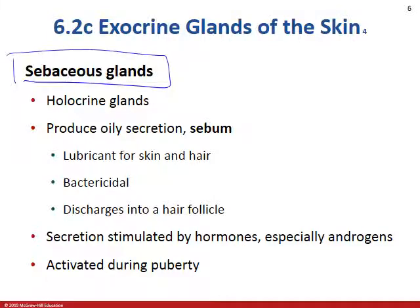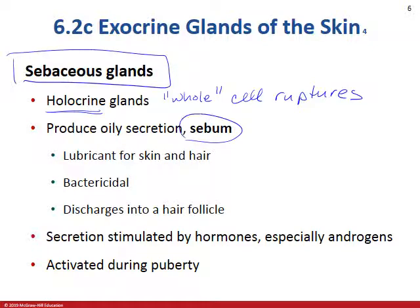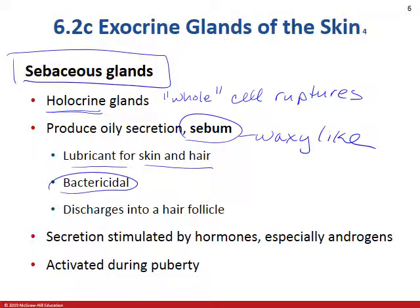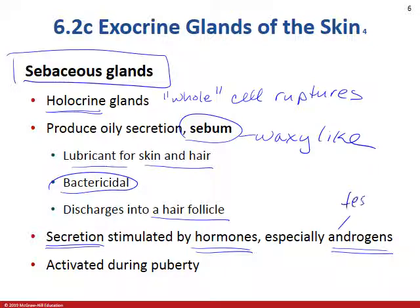The second category is sebaceous glands, which release by the holocrine method — the whole cell ruptures and releases its contents. The entire cell bursts, all the cell parts break down, and are part of the secretion. We call this sebum; it's a lubricant for skin or hair, more waxy-like. There are also some bacterial-killing chemicals produced by the sebaceous gland. It discharges into the hair follicle, and these secretions are controlled by hormones, specifically androgens like testosterone and estrogen. They're really active during puberty, which is why some people have severe acne related to puberty and hormones.